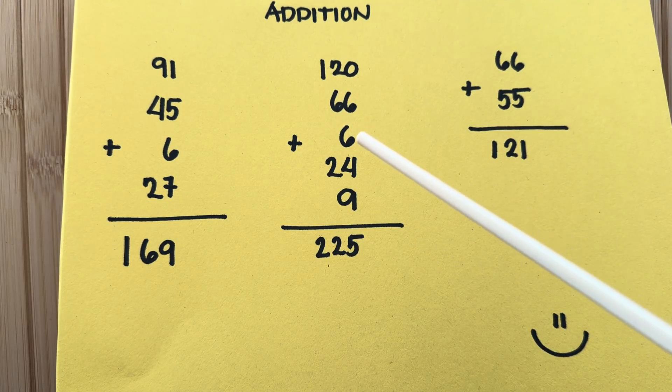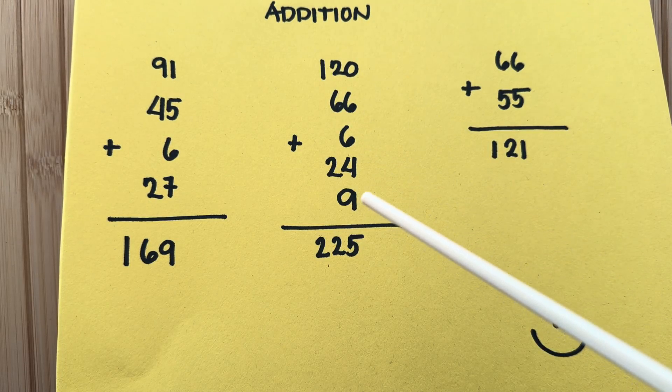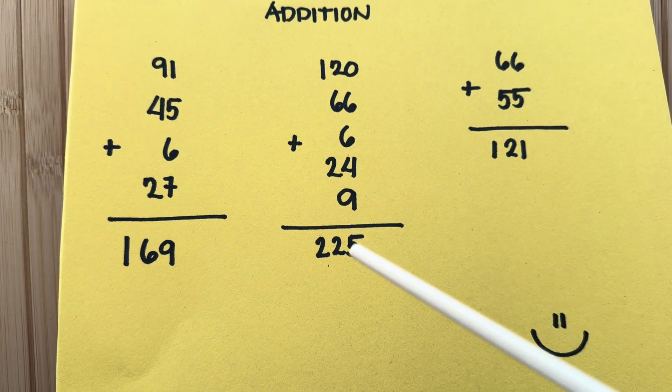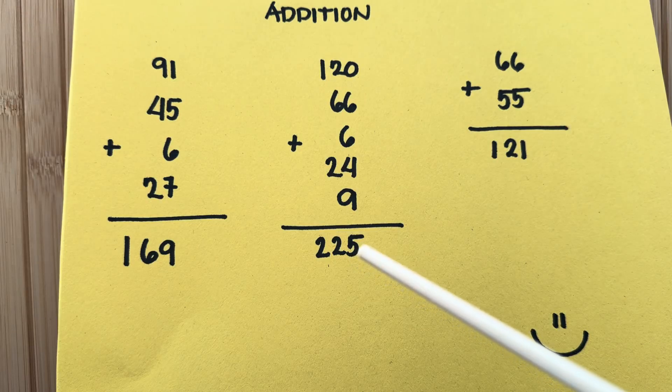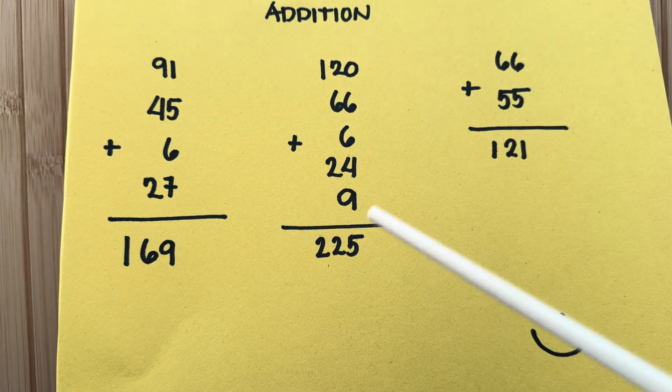120 plus 66 plus 6 plus 24 plus 9 is equals to 225.